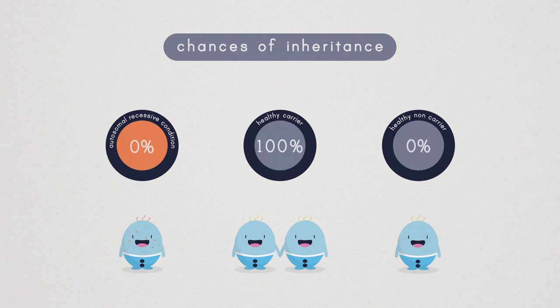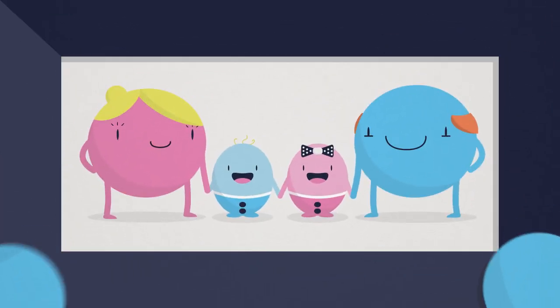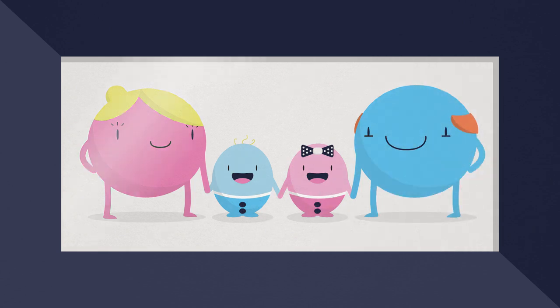When an individual with a recessive condition has children, their children will usually all be healthy carriers of the condition. Their children could develop the condition if their partner happens to be a carrier of a faulty gene, but this would be a rare occurrence. Brothers and sisters of a healthy carrier could also be healthy carriers themselves.